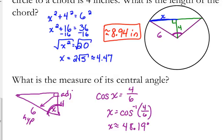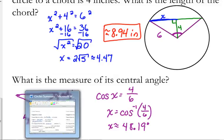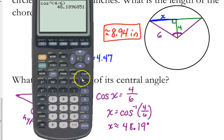Have we answered the question? Is that the measure of the central angle? It's half of it because it's just that left side of that triangle or the big triangle. So we need to double it.